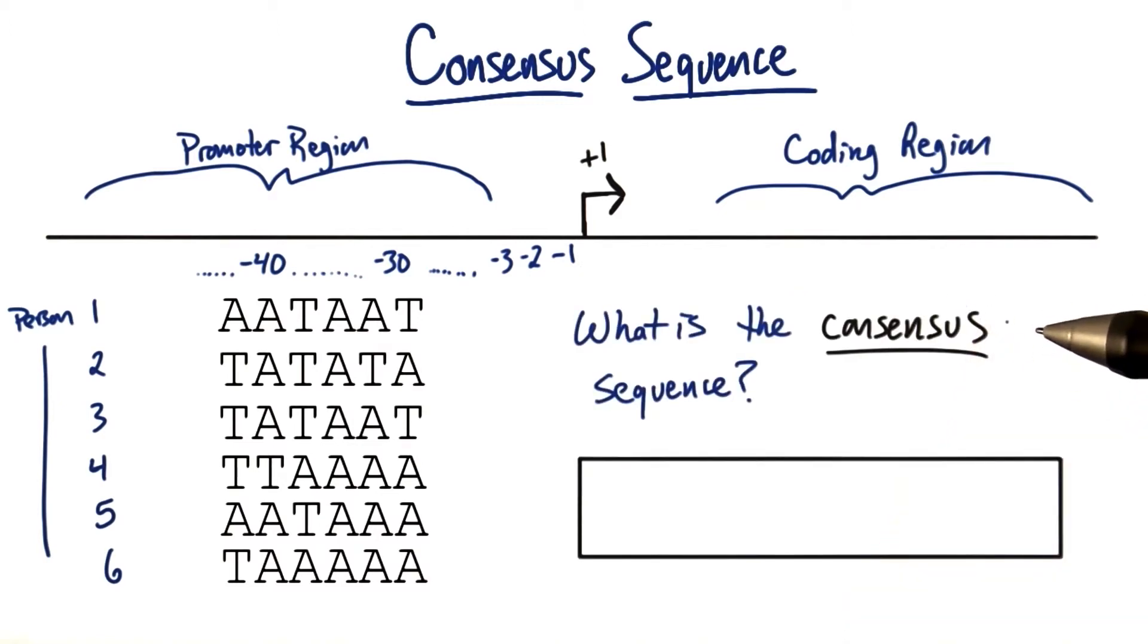What I want you to tell me now that you've learned about what a consensus sequence is, is look at these six different sequences and tell me what is the consensus sequence for these six positions in the minus 30 to minus 40 region of the promoter for this hypothetical gene.